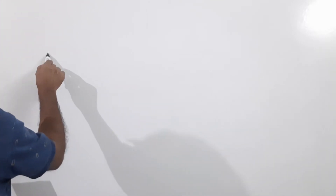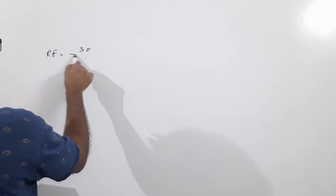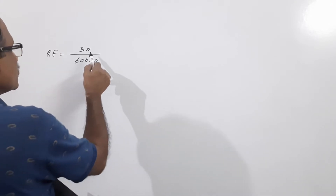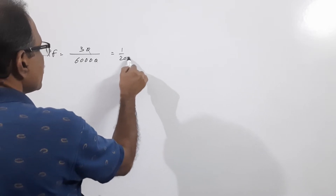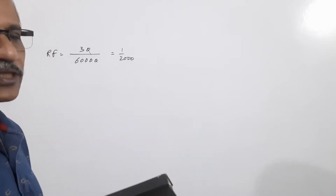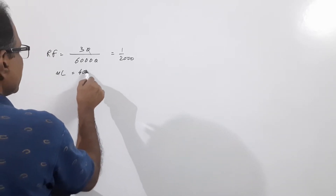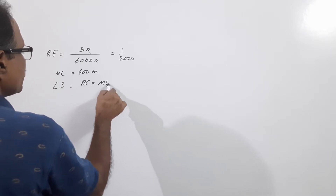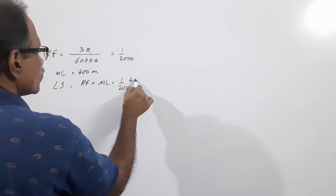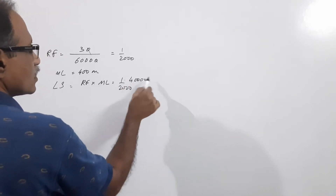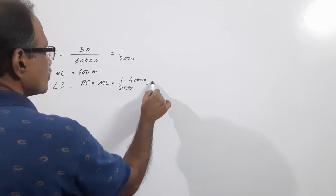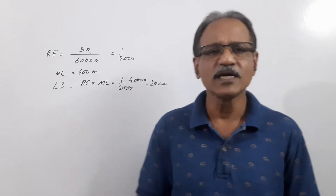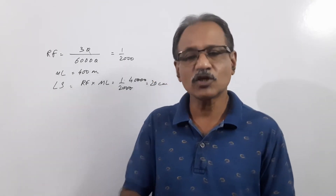The question says that a length of 30 centimeters represents 600 meters. Converting 600 meters into centimeters gives us RF = 1/2000. The maximum length given is 400 meters. Therefore, length of scale = RF × maximum length = 1/2000 × 40000 cm = 20 centimeters. So 20 centimeters measures 400 meters.